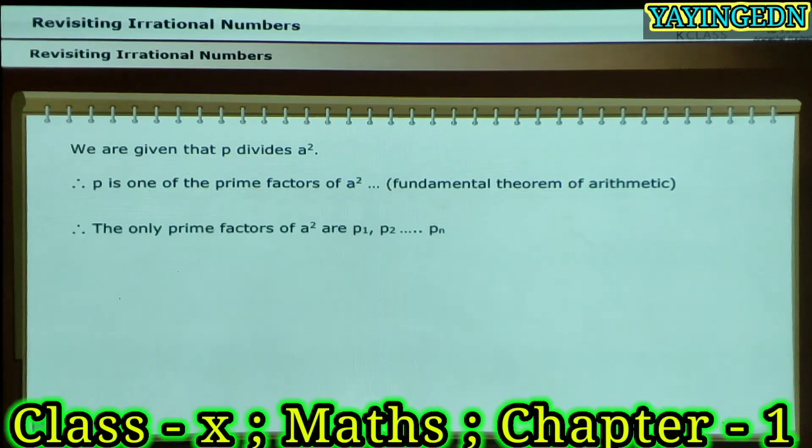Now, using the uniqueness part of the fundamental theorem of arithmetic, the only prime factors of A squared are P1, P2, and so on till Pn. So, P is one of these factors.